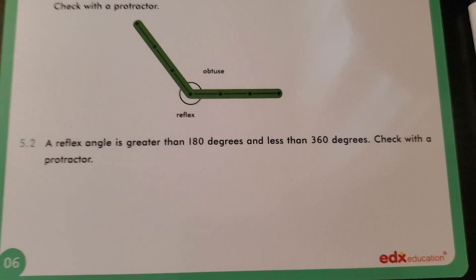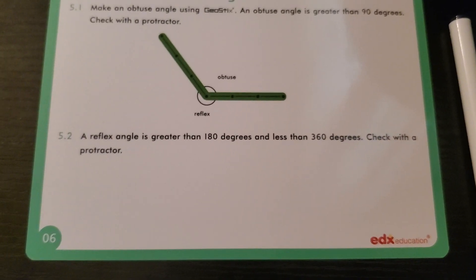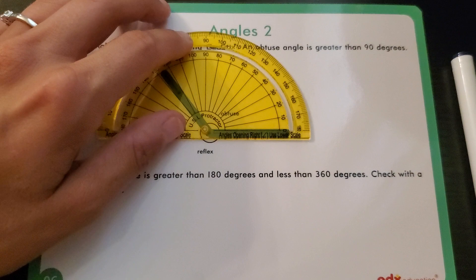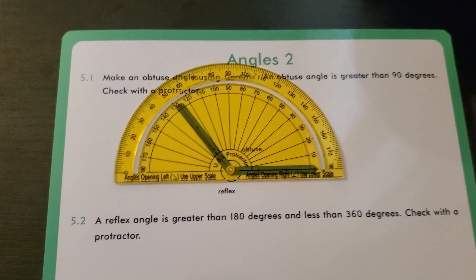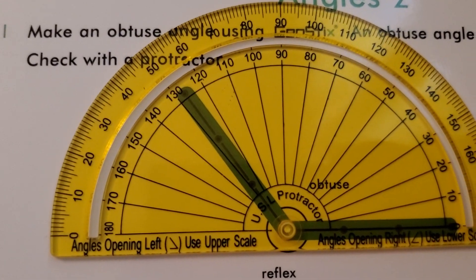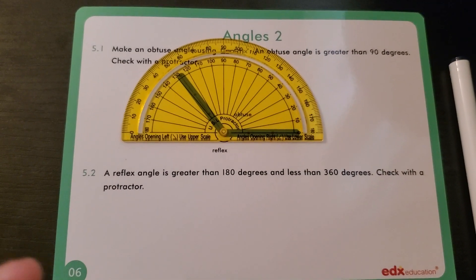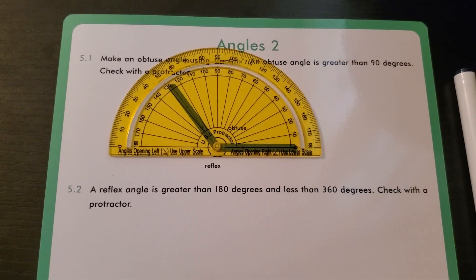A reflex angle is greater than 180 but less than 360, so you'd see that like in a circle. Let's measure out this obtuse angle. This one is about 130 degrees. Just a brief overview of the types of angles that we have.